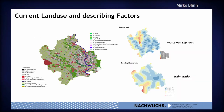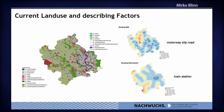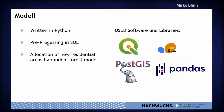Here you can see the results of the data processing — the current land use in the region based on the German official cadastre system, and the distance to train stations and motorways. For the software, we found a way to build the model using a completely open source stack: QGIS, PostGIS, PostgreSQL as the database, and the typical Python scientific stack with Pandas, scikit-learn, and NumPy.